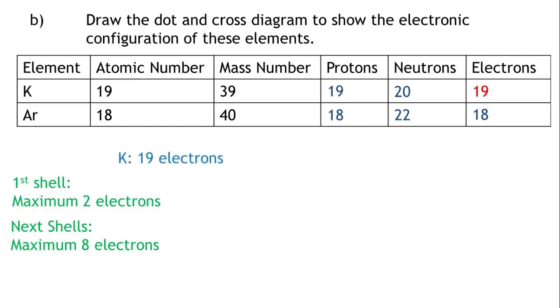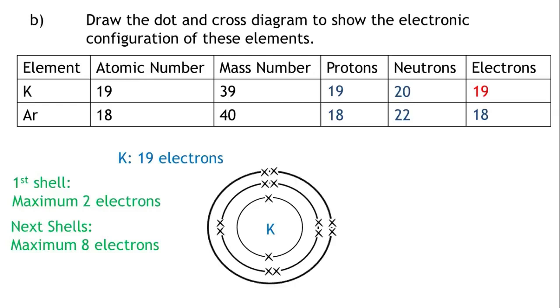Potassium has 19 electrons: 2 in the first shell, 8 in the second shell, 8 in the third shell, and 1 in the fourth shell.